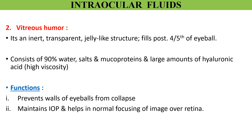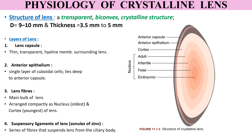The second intraocular fluid is vitreous humor. Vitreous humor is an inert, transparent, colorless, jelly-like structure that fills the posterior four-fifths of the eyeball cavity. It is about 4 ml in volume. Vitreous humor consists of 90 percent water, salts, mucoproteins, and large amounts of hyaluronic acid, which is responsible for its high viscosity. The functions of vitreous humor are: it mainly serves an optical function by helping to properly focus the image on the retina, and it also maintains the shape of the eye and the intraocular pressure.